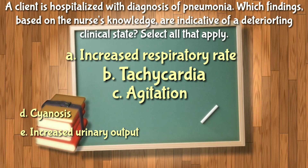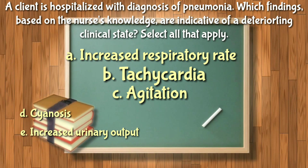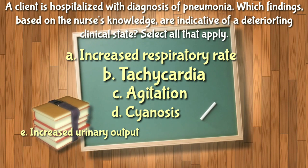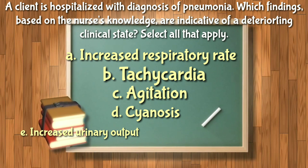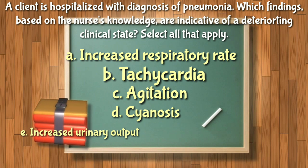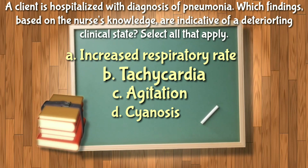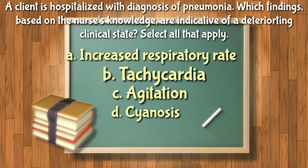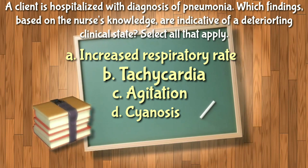Cyanosis develops later in the progression of respiratory distress but is still an indication of client deterioration, so letter D is also included. Increased urinary output is not included because it is the opposite of what would be expected in a deteriorating client with respiratory distress. The final answer is letters A, B, C, and D.